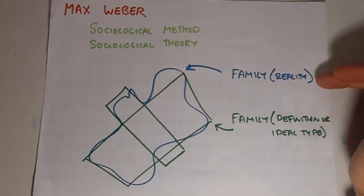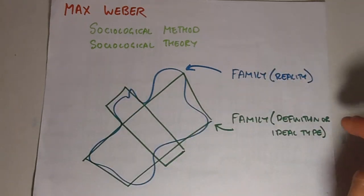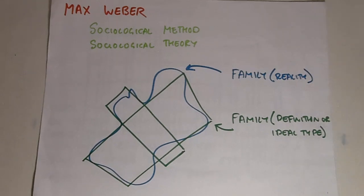If we imagine the blue family here as reality, families as they really are, and the green as our understanding or our definition of family, we can see where the ideal type begins to work in scientific methodology.